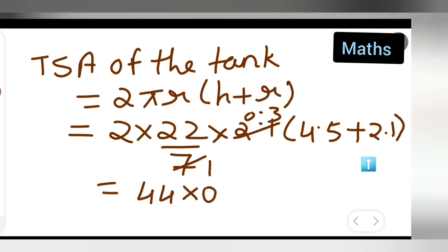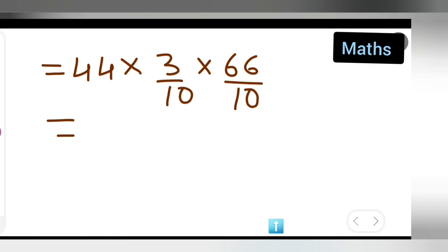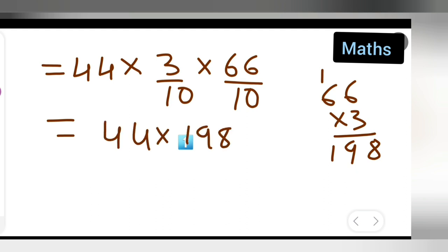Simplifying: 7 into 2.1 gives 0.3, so we get 44 × 0.3 × 6.6. Removing decimals: 44 × 3/10 × 66/10. Now 3 × 66 = 198, so we have 44 × 198 upon 100.